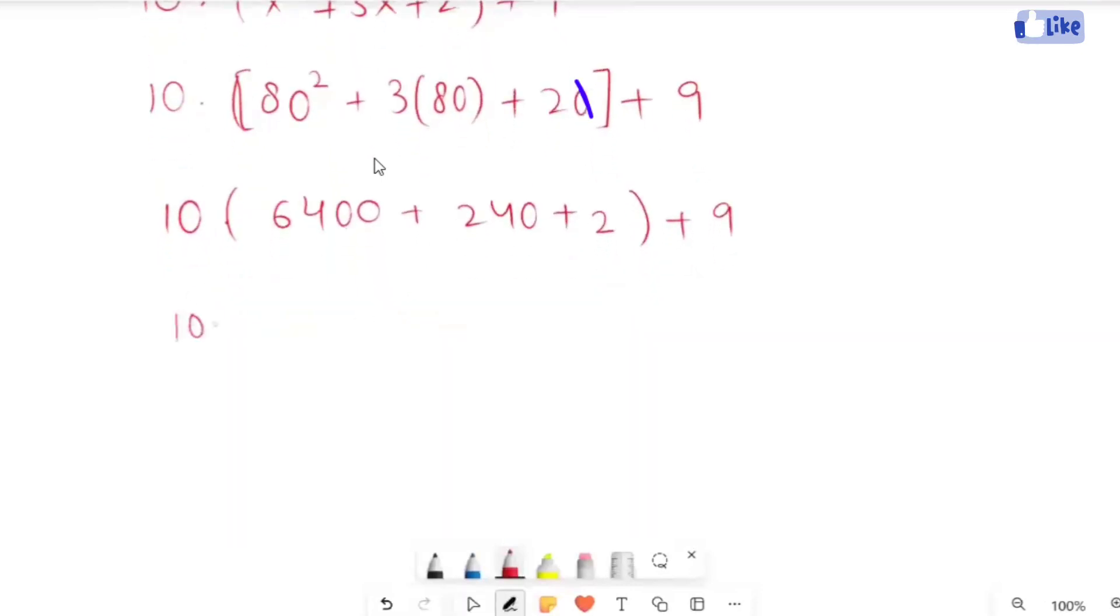I'm going to solve the value, so it will turn to 10 times (6400 plus 240 plus 2) plus 9. This equals 10 times 6642 plus 9, which equals 66420 plus 9.